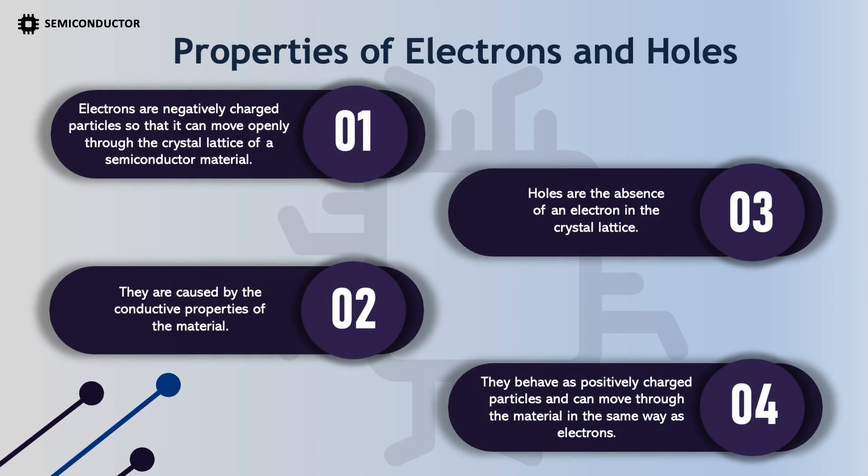Properties of electrons and holes: Electrons are negatively charged particles that can move freely through the crystal lattice of a semiconductor material, and they are responsible for the conductive properties of the material. Holes are the absence of an electron in the crystal lattice; they behave as positively charged particles and can move through the material in the same way as electrons.